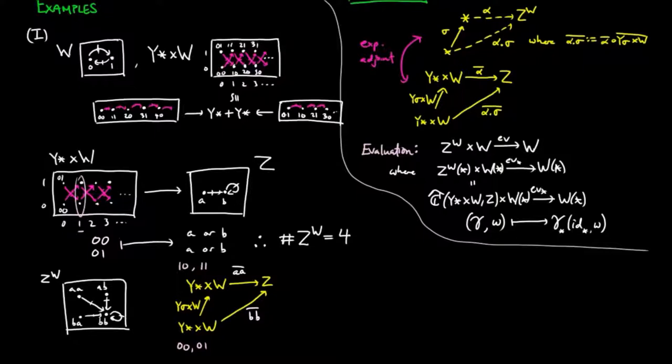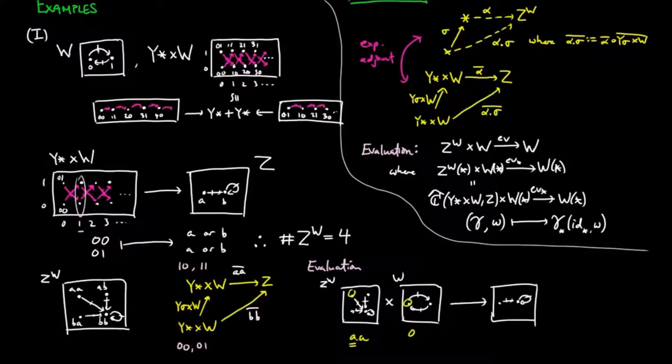Now that we have the exponential object constructed, let's see how the evaluation morphism behaves. The product consists of pairs of figures, so the pair AA and 0 is mapped to the 0th coordinate of AA, namely A. AB and 1 is mapped to the first coordinate B, and similarly for other figures. We leave it to you to check that this morphism respects the sigma action.